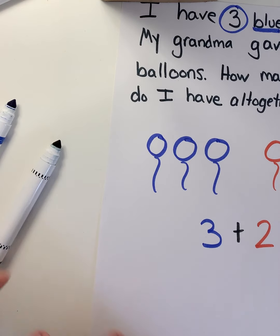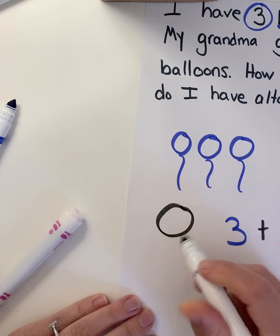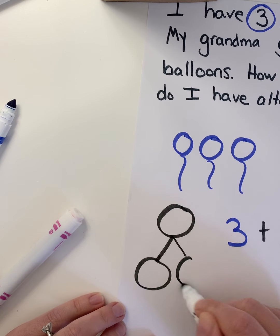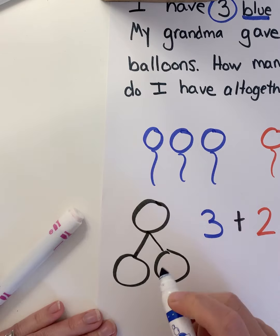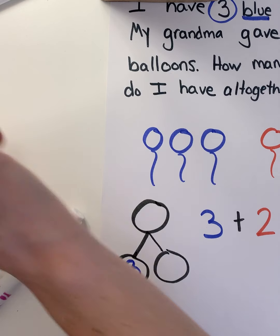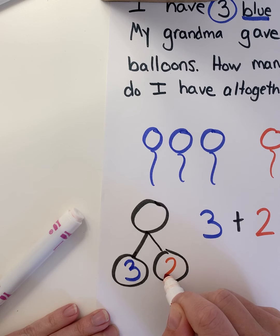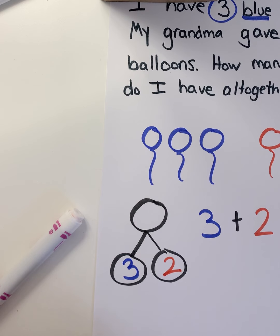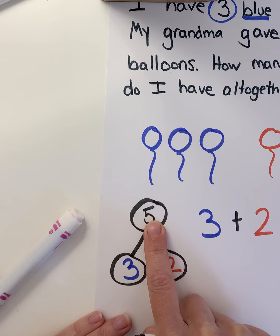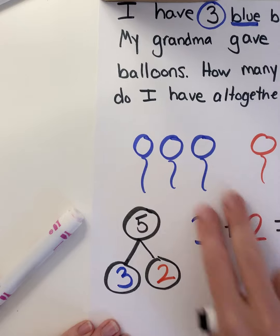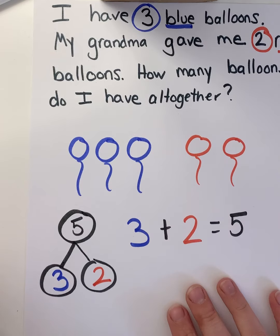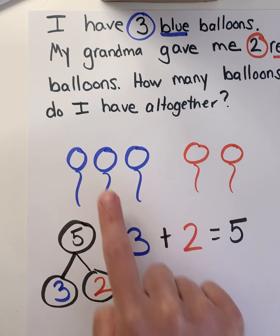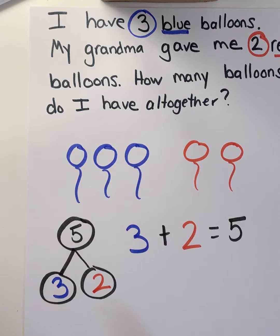I'm just going to show the number bond to show you how we can fit our numbers in there. We have a whole and we have two parts. One of my parts is my blue balloons — three blue balloons. My other part is my two red balloons. And when I put them all together, I have five all together, because three and two makes five. So you can see how our number bond works with our story problem. Drawing a picture is another really good strategy for learning how to add our numbers, and you can still use your number bond alongside it.